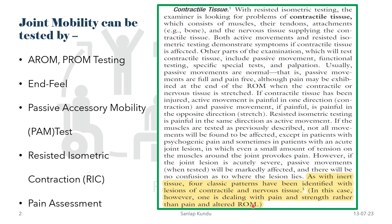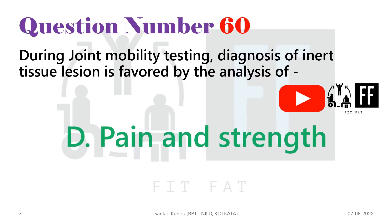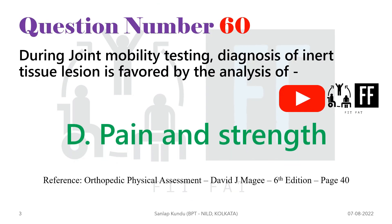In the case of inert tissue lesions, one is dealing with pain and strength rather than pain and altered range of motion. So the answer is option D — pain and strength. You can find more about this in the Orthopedic Physical Assessment Magee book, page 40. This is part of RIC, that is resisted isometric contraction.